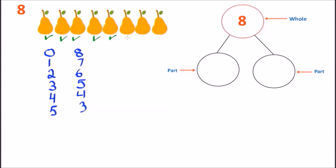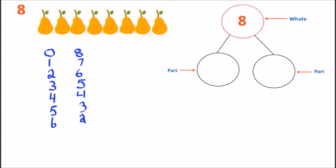Five and three — let's keep counting: 1, 2, 3, 4, 5, 6. So now we have 6. Put the 6, and how many pairs are remaining? 1 and 2 — we have 2. So now we have 6 and 2. On top we had 2 and 6 — two different ways of writing the same numbers that give us the number 8. Six is on the left side, two is on the right, and it gives us the whole of 8.